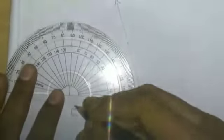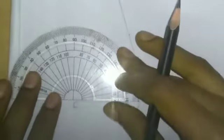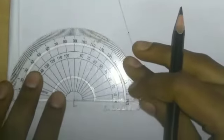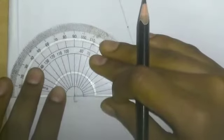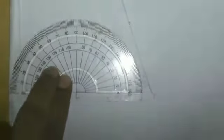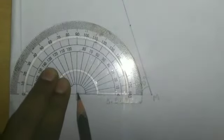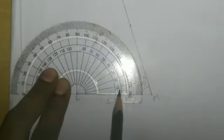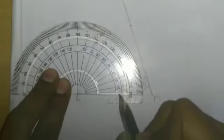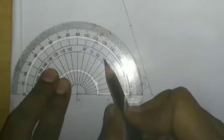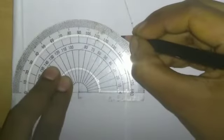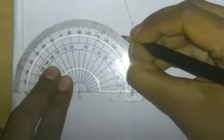Now place the protractor at point L. Read the values: 0, 10, 20, 30, 40, 50. Angle L is 50 degree, then join.